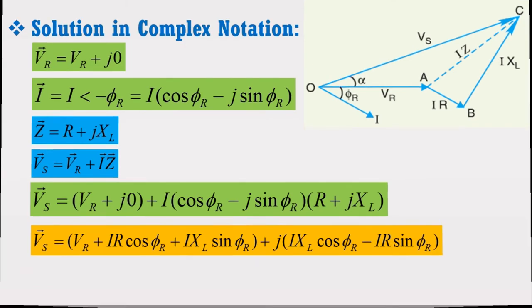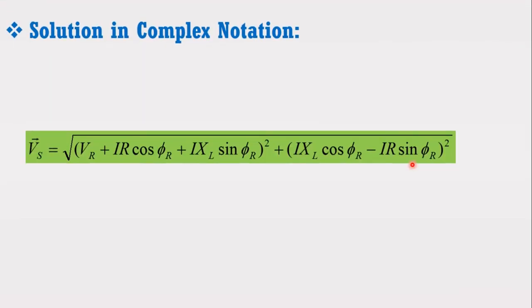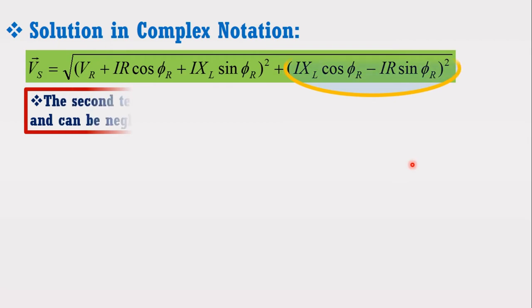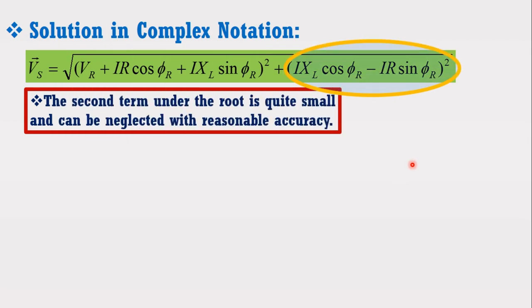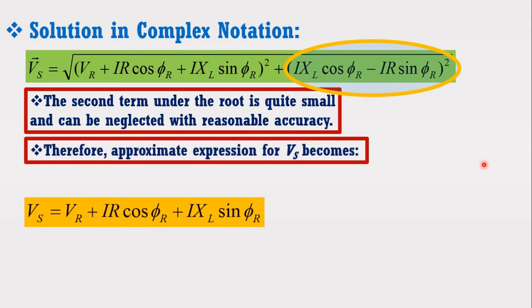Taking the magnitude, we get the following expression. The second term under the root is quite small and can be neglected with reasonable accuracy. Therefore, the approximate expression for Vs becomes as below.